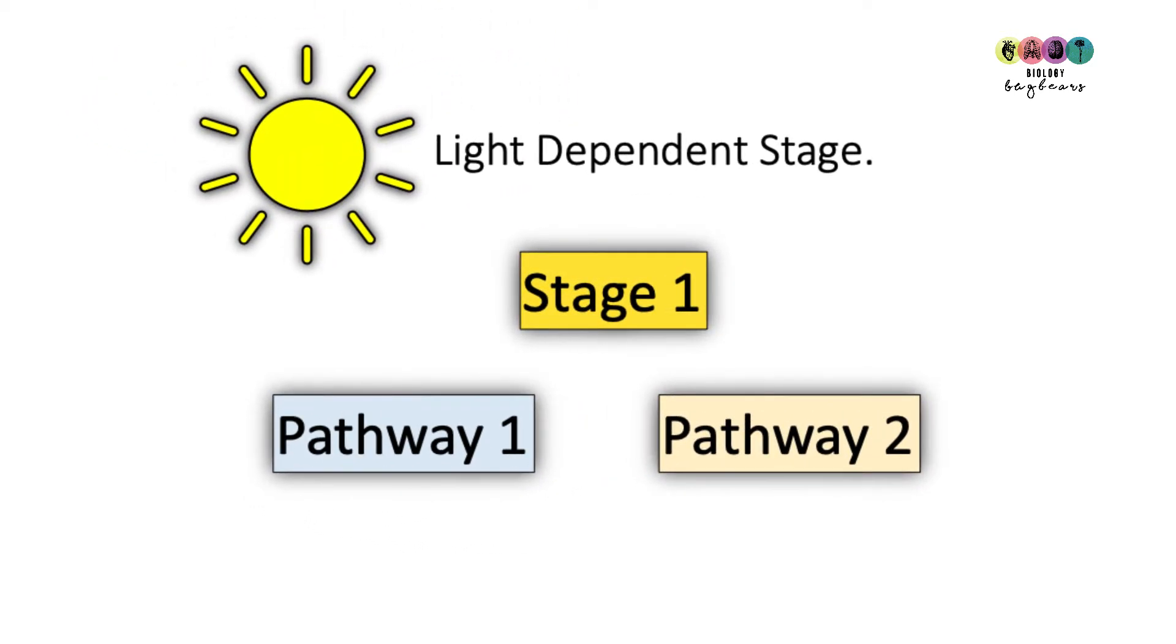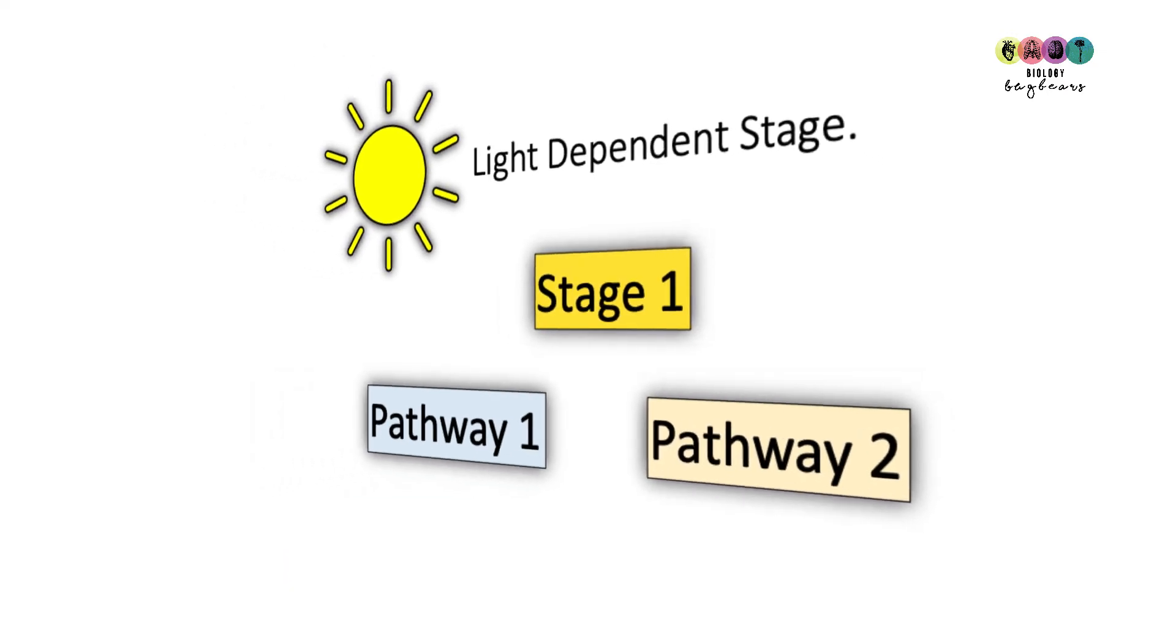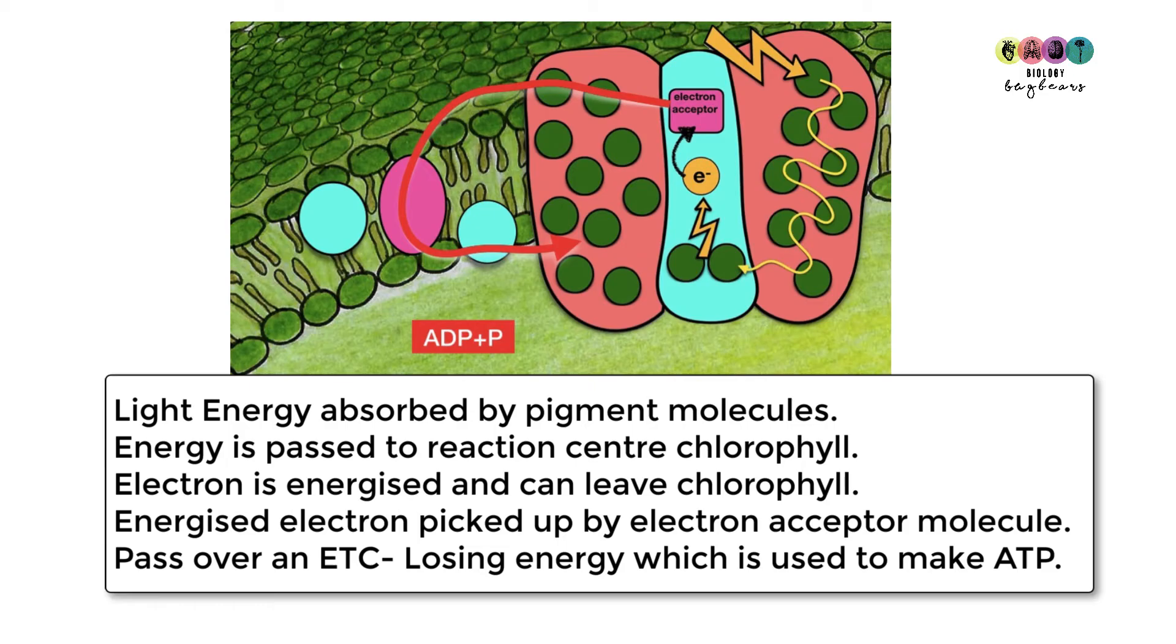The light dependent stage has two possible pathways: pathway one or pathway two. Pathway one is the cyclic pathway. Let's discuss what happens in pathway one now.